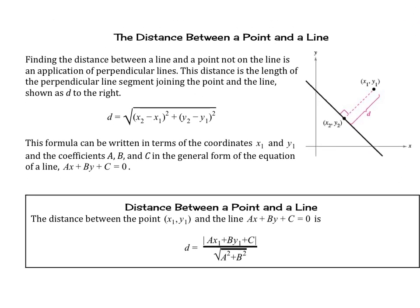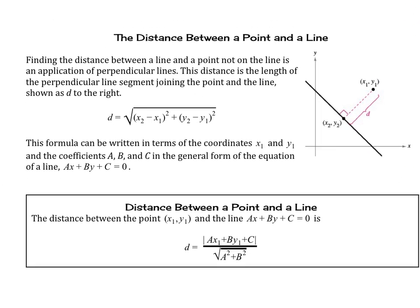Now let's look at the distance between a point and a line. Finding the distance between a line and a point not on the line is an application of perpendicular lines — it's the length of the perpendicular line segment joining the point and the line. We use the distance formula: distance equals the square root of (x2 minus x1) squared plus (y2 minus y1) squared.